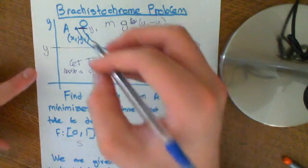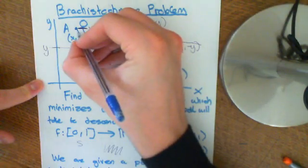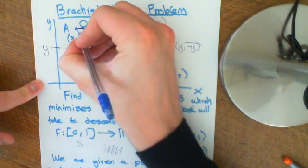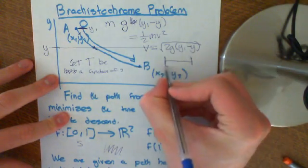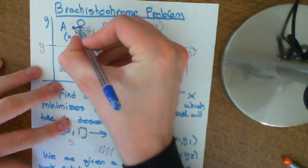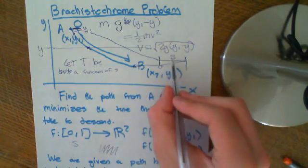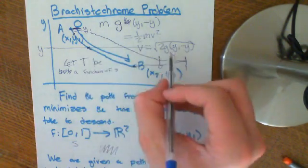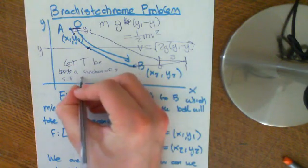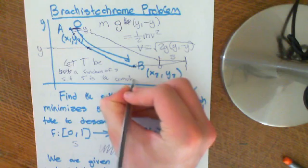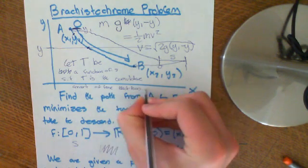Basically, I'm saying we have this parametrization which is ascribing for every value of s in 0 to 1, it's giving you a point in the two-dimensional plane. So it's plotting out this path. Every point on this path has an s value corresponding to it. So I will define t to be a function of s such that t is the cumulative amount of time that has elapsed.